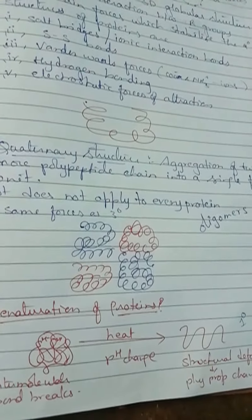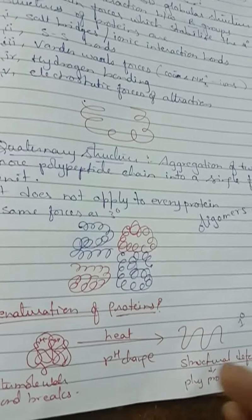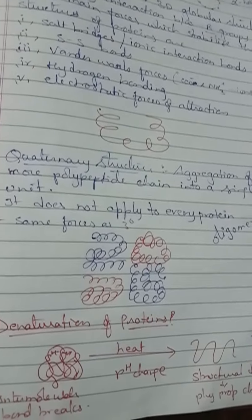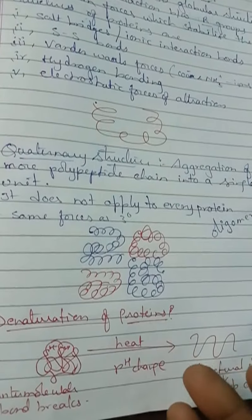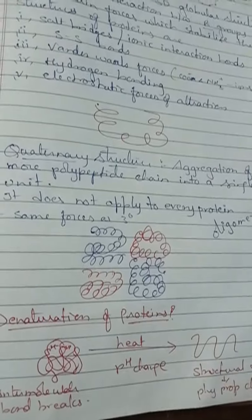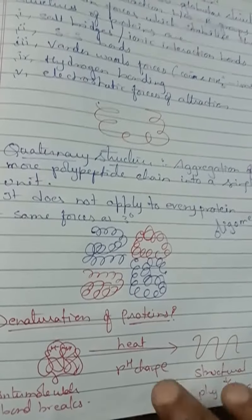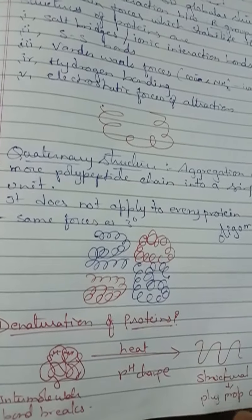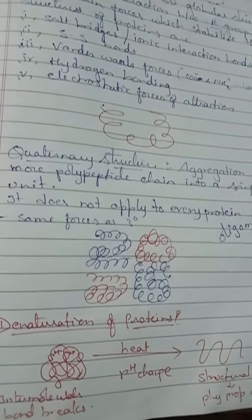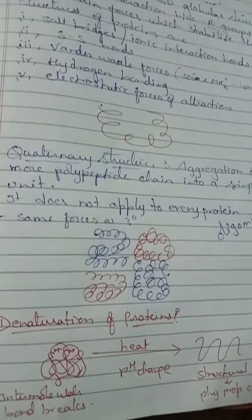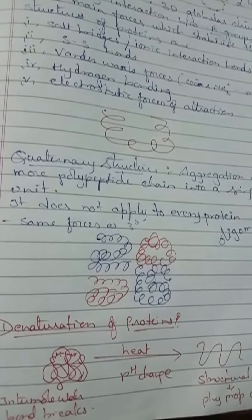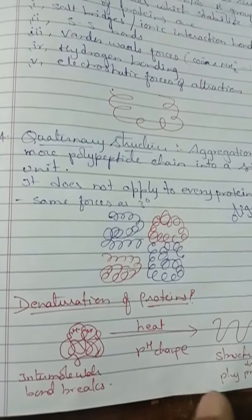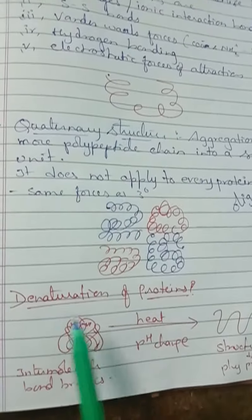The factors responsible for denaturation are: change in pH level, which breaks down hydrogen bonds and electrostatic forces of attraction; adding detergents, which break down normal hydrophobic interactions among non-polar groups; adding reagents like urea, which forms stronger hydrogen bonds with proteins than those present between the groups; and heating, which breaks down the attractive forces present in proteins.